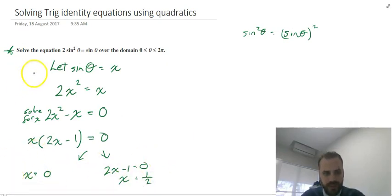Now that I know that, I can come back to where I started here, where I said let sine theta equals x. If x equals sine theta and x equals 0, then sine theta equals 0. And if x equals 1 half and sine theta equals x, then that means that sine theta equals 1 half. Now I've got two answers here, and I just need to solve for theta between 0 and 2 pi.